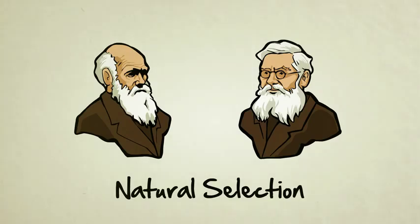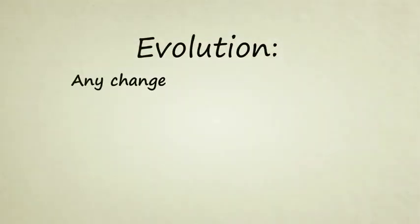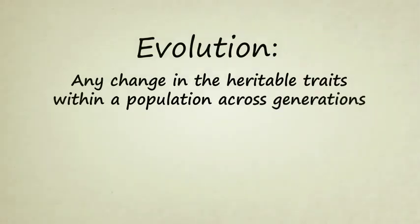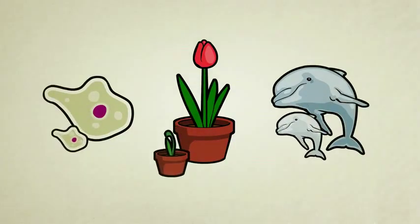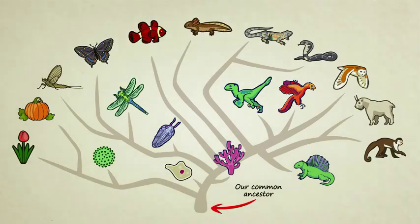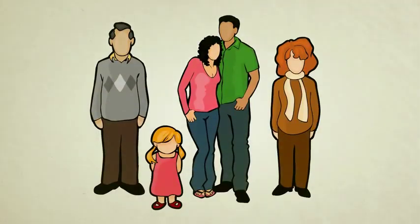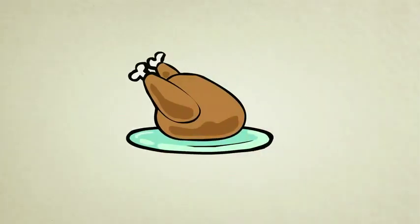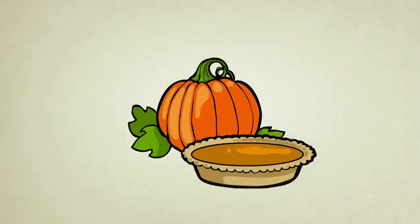But before you move on, let's recap what we've learned so far. Biological evolution is any change in the heritable traits within a population across generations. All healthy living things can make copies of themselves, but they do so imperfectly. Small variations can add up over generations to create dramatic differences in the body form and function of living creatures. Evidence overwhelmingly suggests that all life on Earth is related. So remember, next time you invite family and friends over for a holiday feast, you're actually just inviting family — that includes the turkey and the pumpkin in the pumpkin pie.